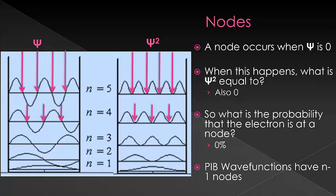Particle in the box wave functions will have a certain number of nodes that is always equal to n minus one.